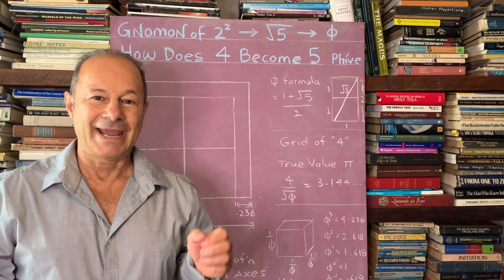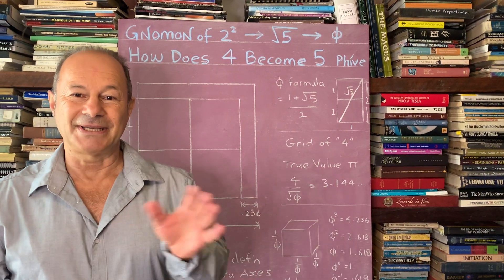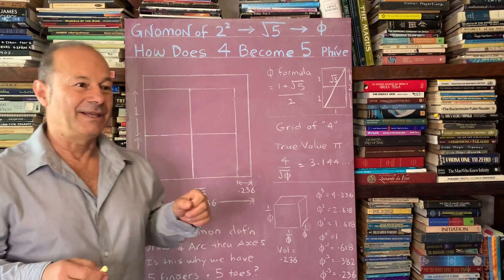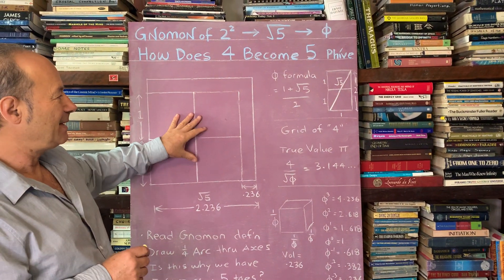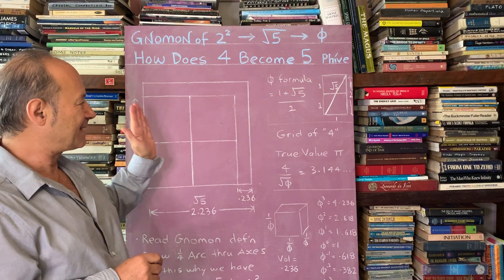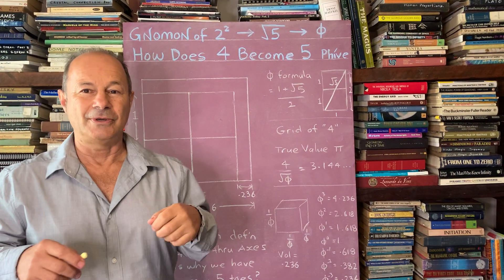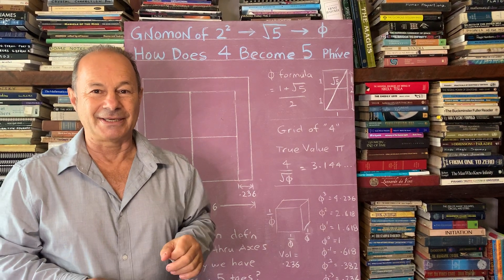Have you ever thought about how the number 4 becomes the number 5? It may sound really simple, but the translation of number into its next successive number actually opens a whole new door into what we call sacred mathematics.